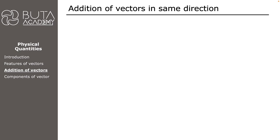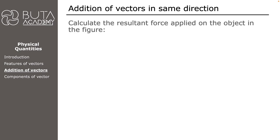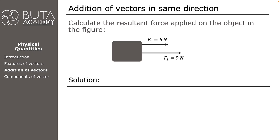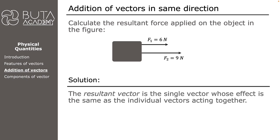Now, adding vectors in the same direction. Let's use an example: calculate the resultant force applied on an object where the first force is six newtons and the second is nine newtons, both to the right — meaning they are in the same direction. We start by defining the resultant vector: the resultant vector is the single vector whose effect is the same as the individual vectors acting together.